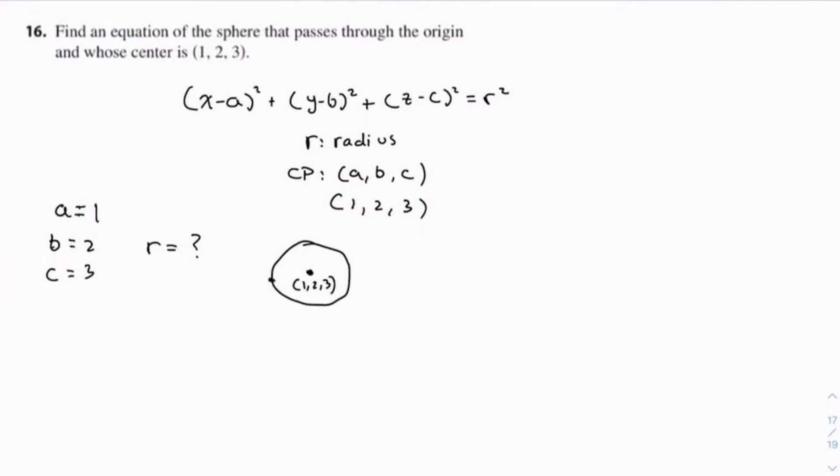And the origin is (0, 0, 0). So we can use the distance formula to find this distance between the two points, which is r.